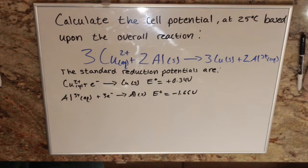The standard reduction potentials are: copper 2 plus to copper solid is plus 0.34 volts, and aluminum 3 plus to aluminum solid is negative 1.66 volts.